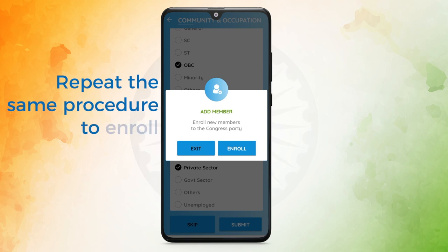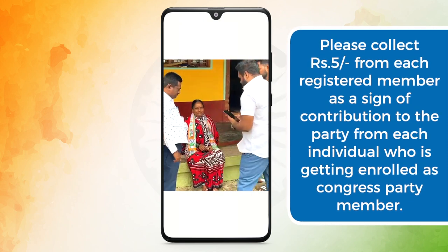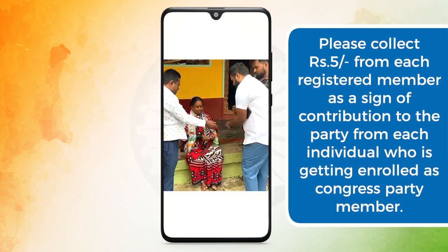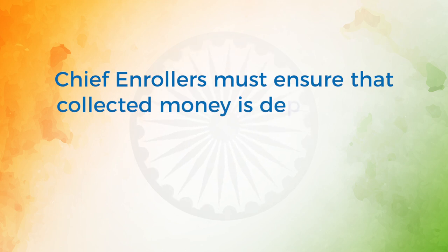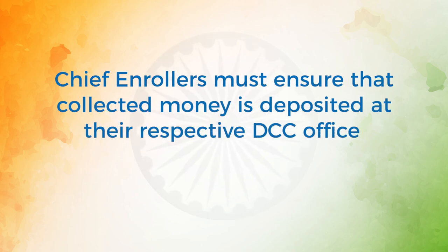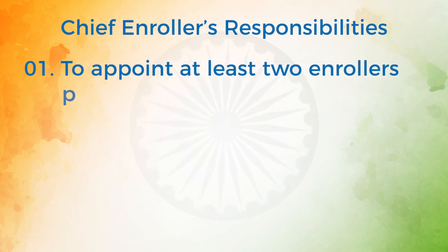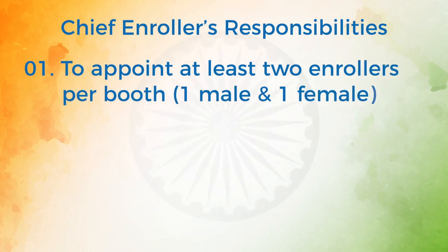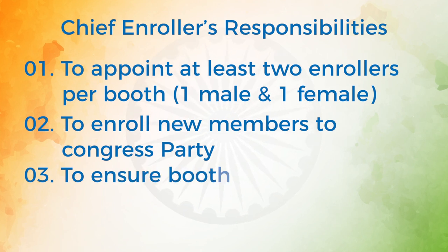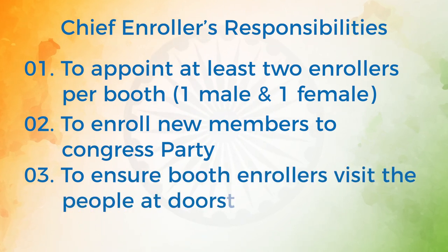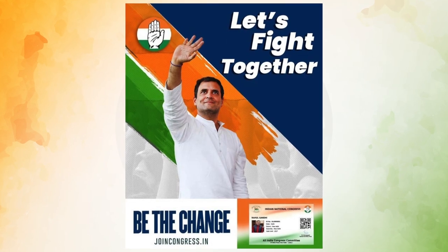Repeat the same procedure to enroll new members. Please collect 5 rupees from each registered member as a contribution to the party from each individual getting enrolled as a Congress party member. Chief Enrollers must ensure the collected money is deposited at their respective DCC office. Chief Enroller responsibilities: 1. Appoint at least two enrollers per booth — one male and one female. 2. Enroll new members to the Congress party. 3. Ensure booth enrollers visit people at their doorstep and take up the membership drive. Thank you!